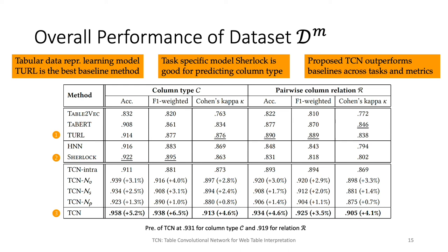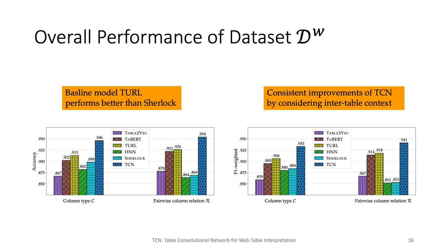In the two figures presenting results on the wiki tables dataset, we generally have similar observations, with the minor exception that TURL performs better than ShareLock in this case, probably because numerical cell values are less useful in this dataset. The proposed model consistently outperforms other baselines by considering the inter-table contextual information.